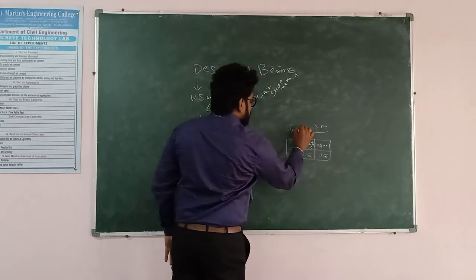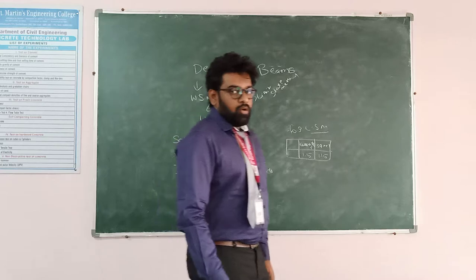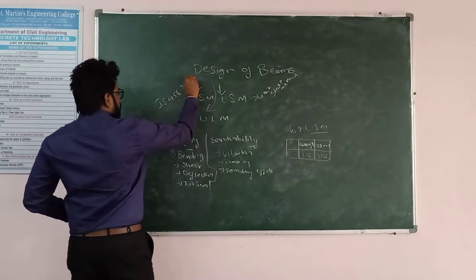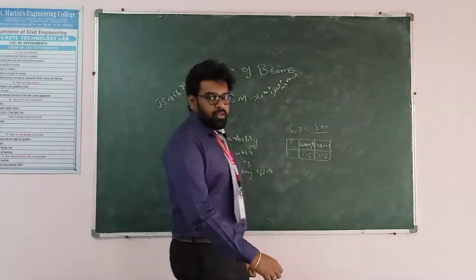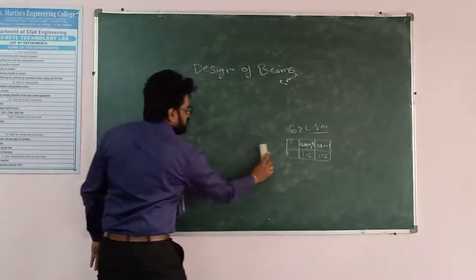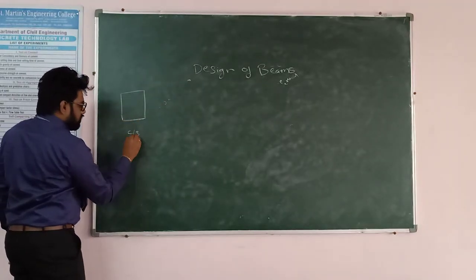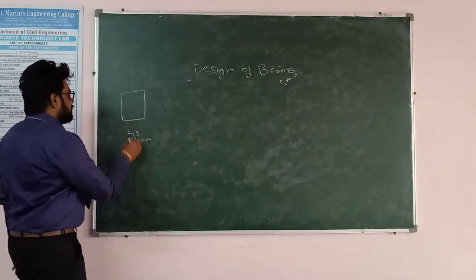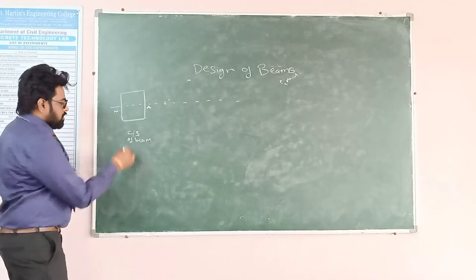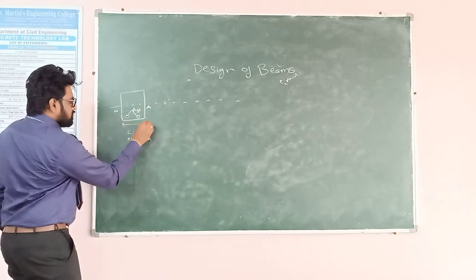In the Limit State Method, to design beams we refer to IS 456. There are few assumptions made by IS 456 that we have to follow in order to design beams. The first assumption relates to the cross-section of the beam, where the neutral axis will be at the center of the structure.